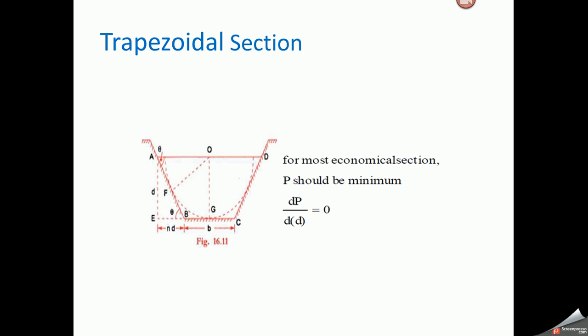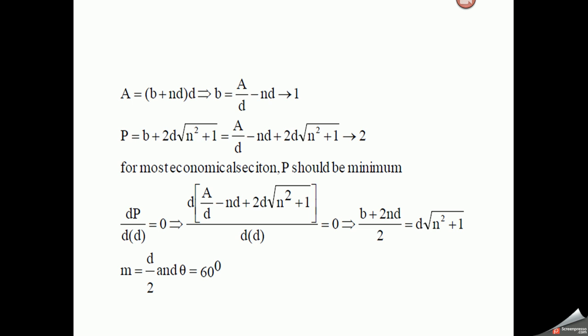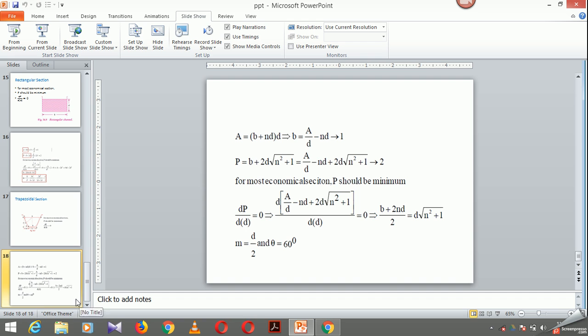For a trapezoidal section with width B and depth D, for the most economical section P should be minimum. Differentiating the parameter with respect to D: area is (B plus N times D) times D (equation 1). Differentiating with respect to D gives hydraulic mean radius M equals D/2, and the half angle of the side slope equals 60 degrees. This is the basic idea of open channel flow. Thanks.